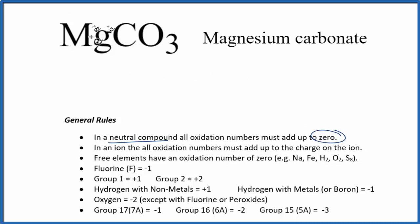We have magnesium here. That's in group 2 on the periodic table, so it's going to have an oxidation number of +2. Carbon, you won't see that in our rules. It can have variable oxidation states.